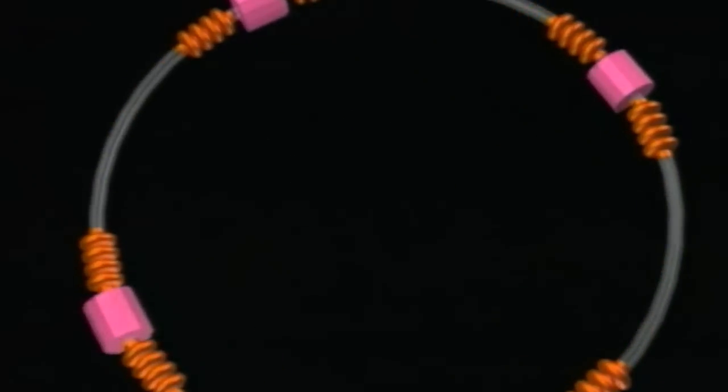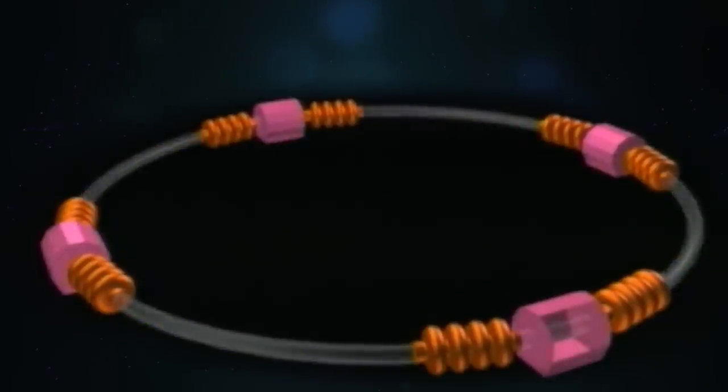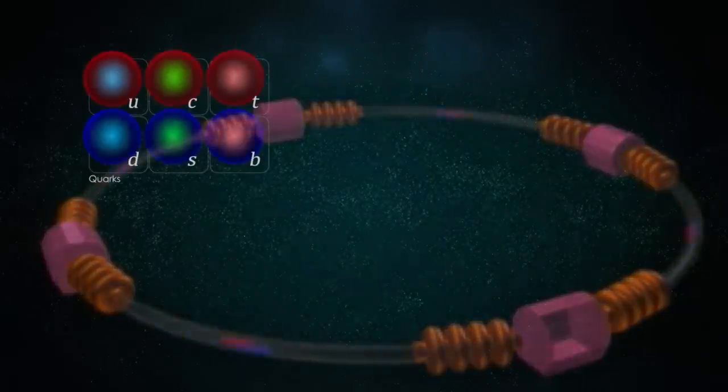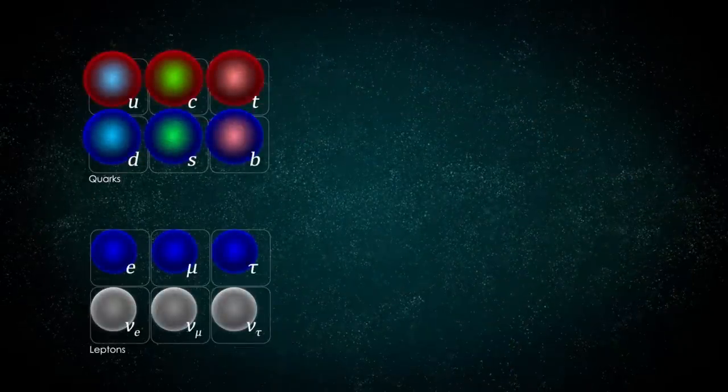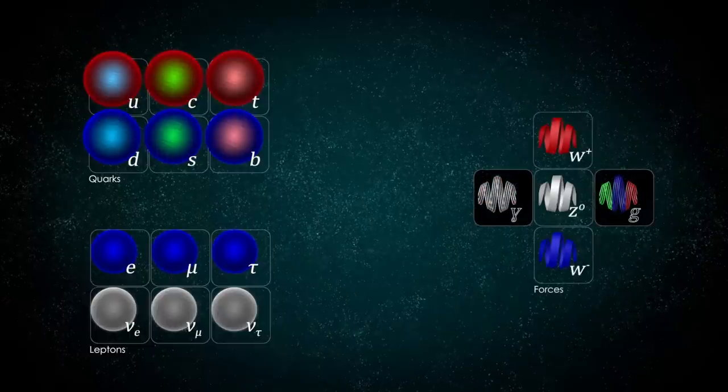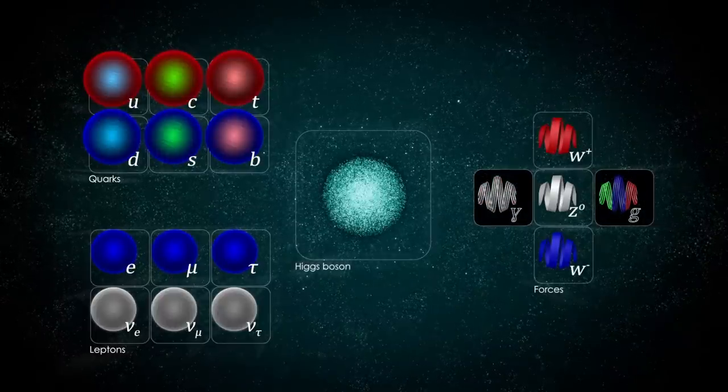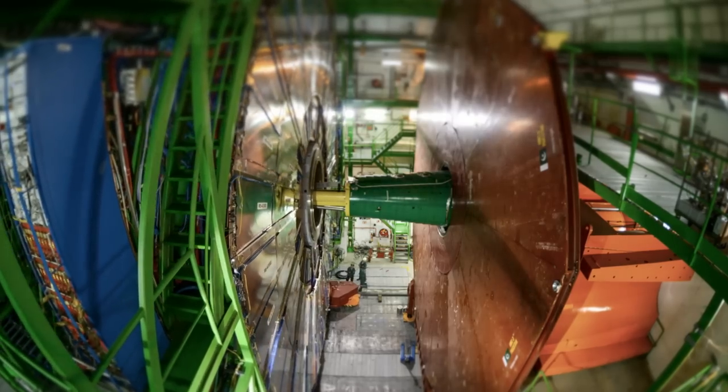During its eleven years of operation, LEP placed electroweak theory on solid experimental ground. The Standard Model was almost complete, but what accounted for the mass of particles? There was one last missing piece of the puzzle to uncover: the physical manifestation of the Brout-Englert-Higgs mechanism, a particle called the Higgs boson. Its discovery was in sight.